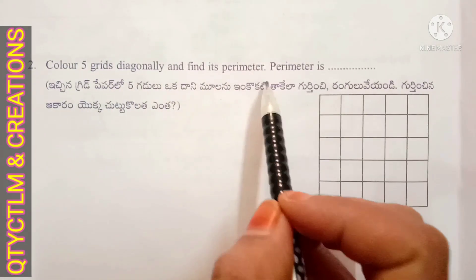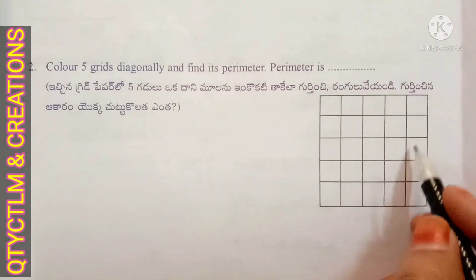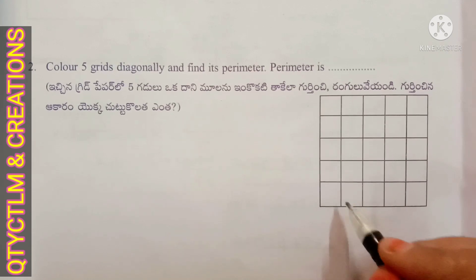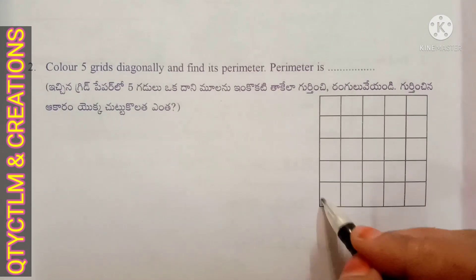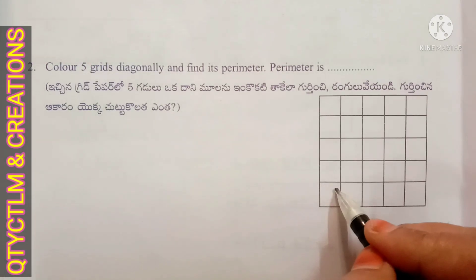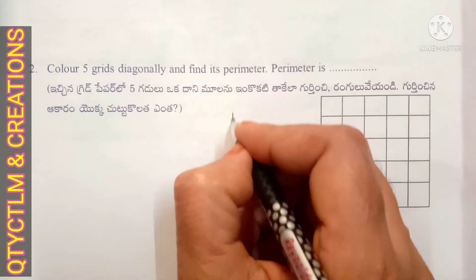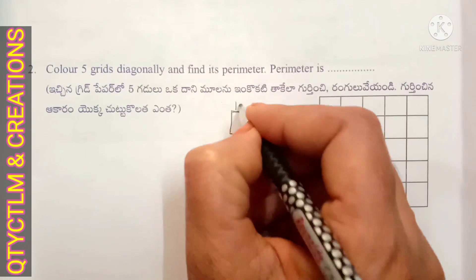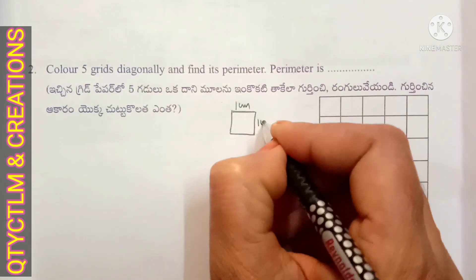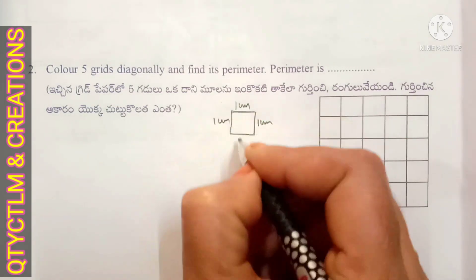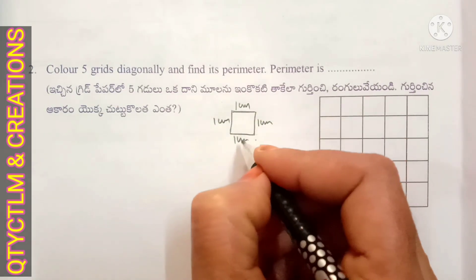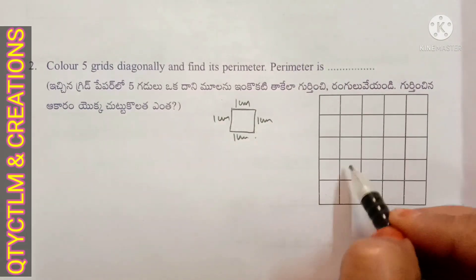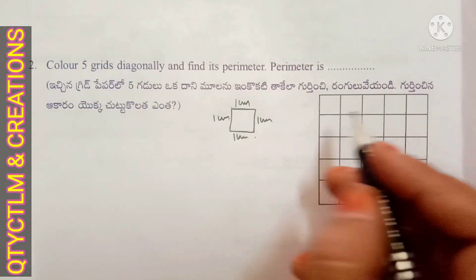Next question: color five grids diagonally and find the perimeter. In this grid sheet, all the grids or boxes are in the shape of a square with side 1 centimeter. So one side contains 1 centimeter, this is also 1 centimeter. Thus the perimeter of each grid is 4 centimeters.